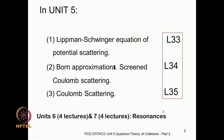This unit will basically have three classes: first on the Lippmann-Schwinger equation, second on the Born approximations, and third on Coulomb scattering. In subsequent units we will have about 8 classes on resonances — 4 classes in Unit 6 and another 4 in Unit 7, for a total of 8 classes on resonances.